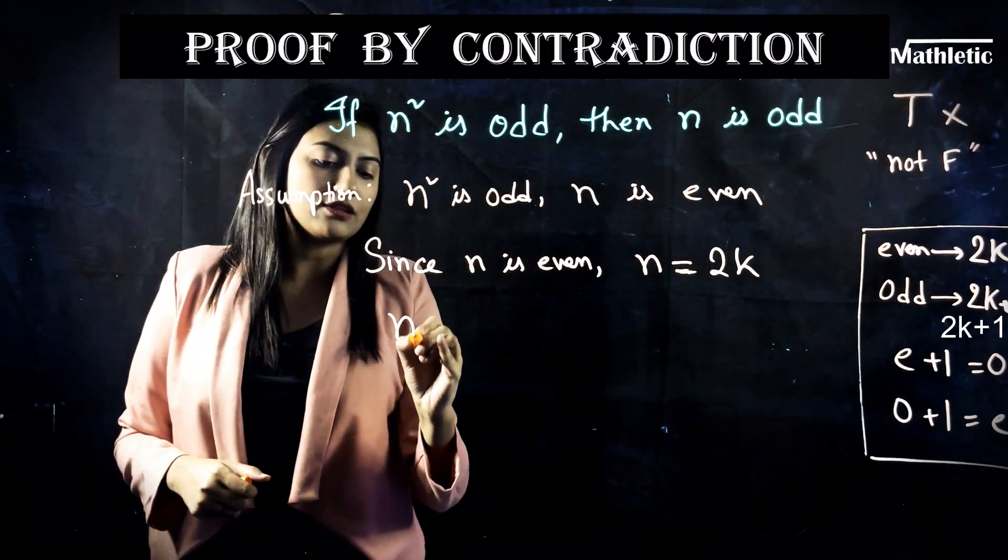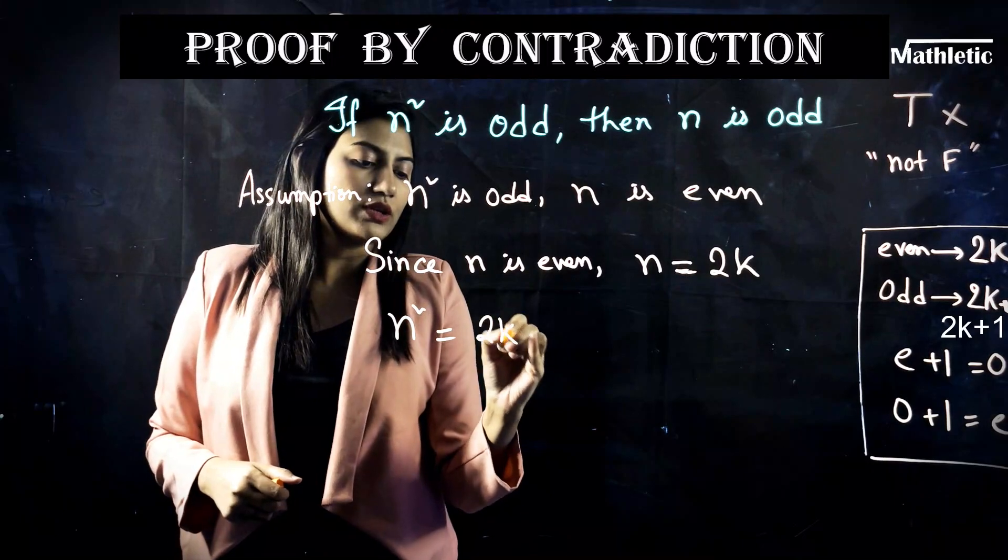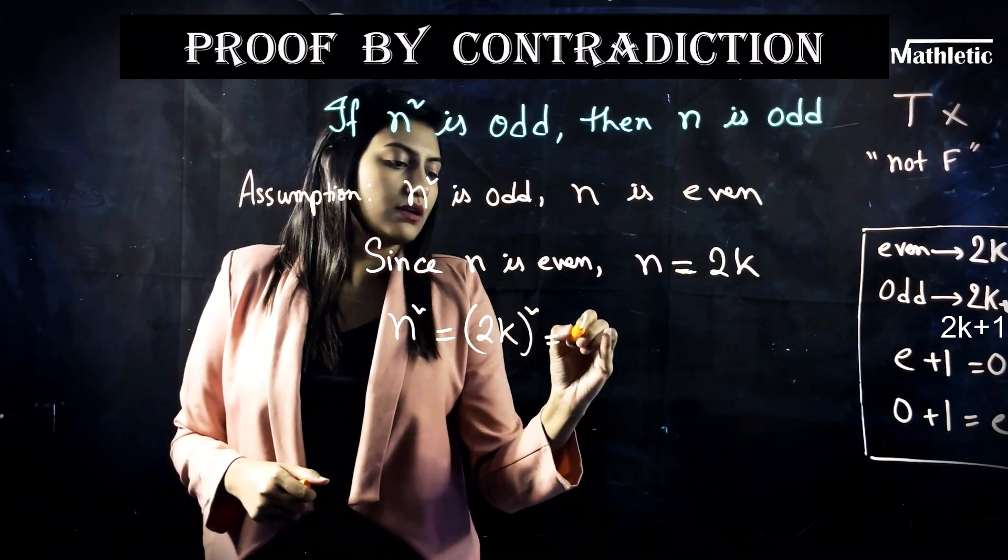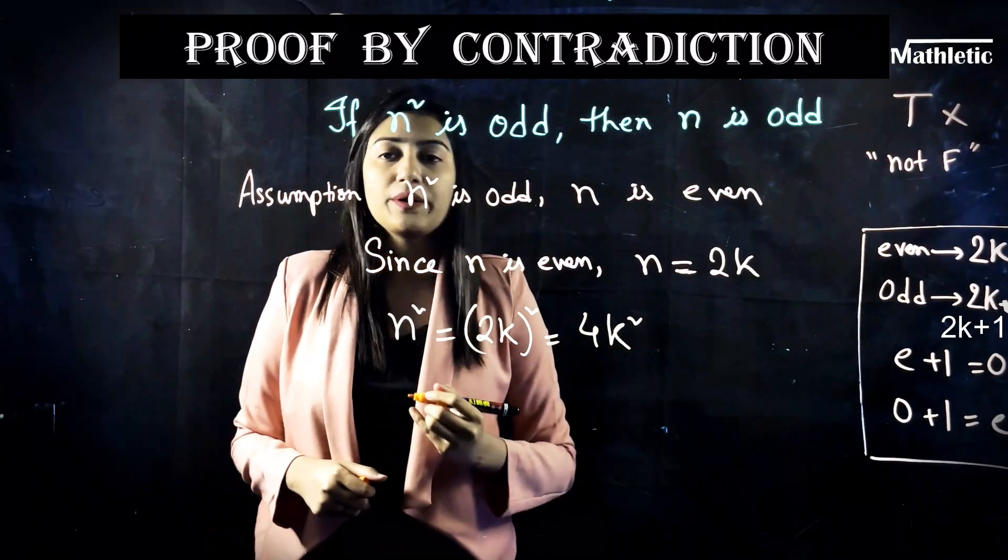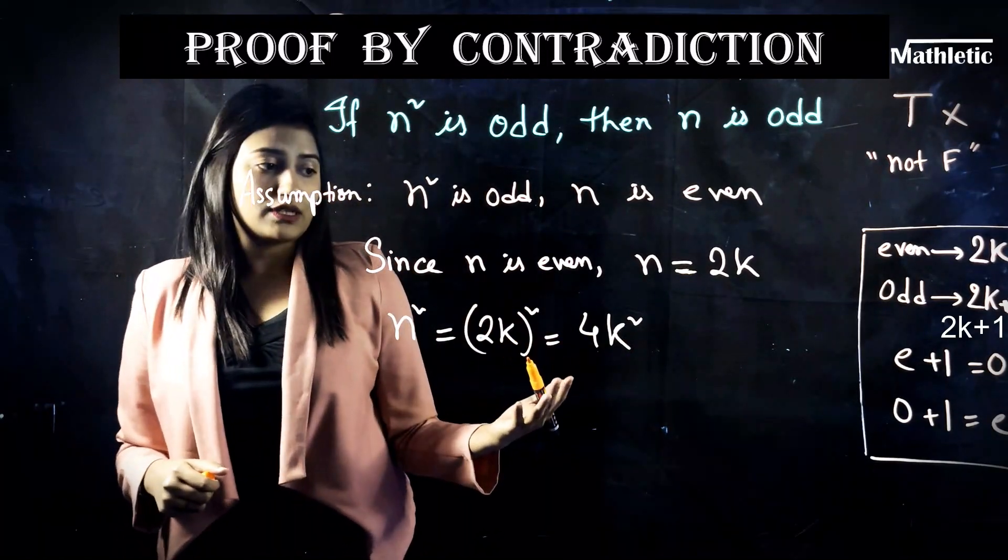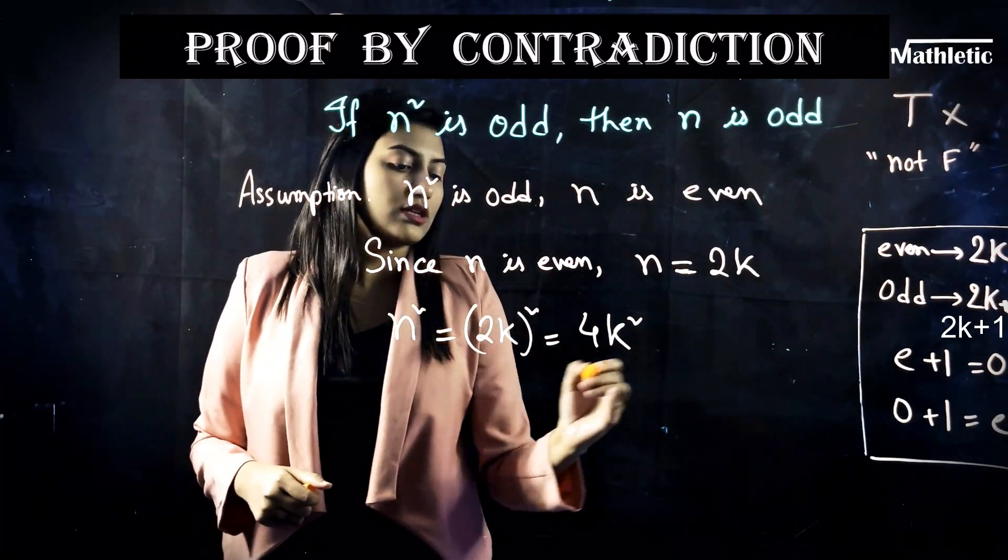So now that I know the value for n, I can actually calculate n² which is (2k)². So 4k². 4k² is a multiple of 2 obviously.